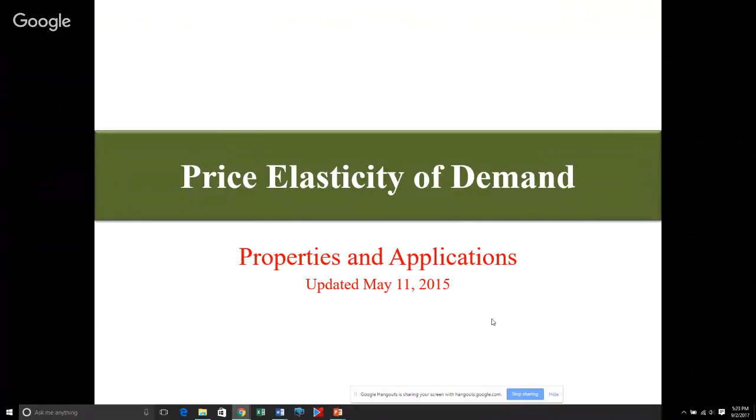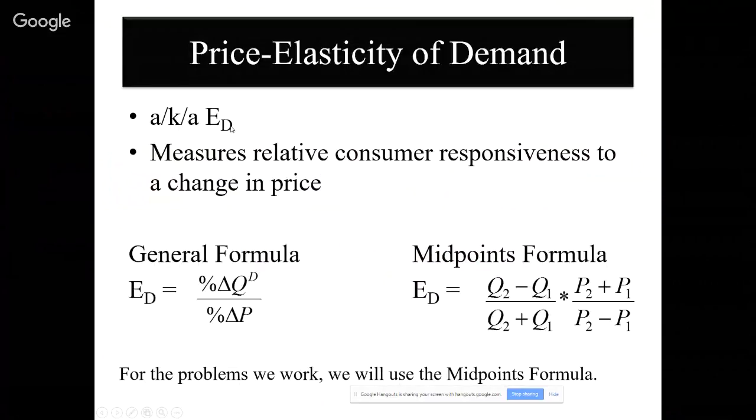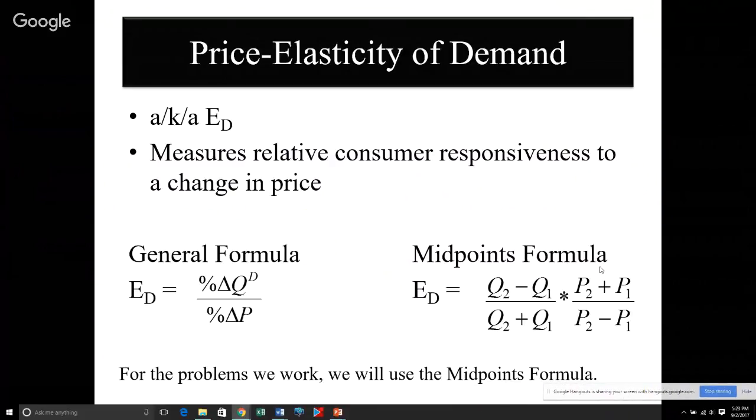Let's start talking about the math end of this stuff. First, price elasticity of demand, E sub D, measures what we call relative consumer responsiveness to a change in price. E sub D is not the same as slope. Slope is an absolute rate of change, whereas E sub D is a relative rate of change. Think of it this way: five dollars is a big percentage of ten dollars, it's fifty percent. But five dollars is a very small percent of fifty thousand dollars. It's measuring relative sensitivity of a percentage change in quantity demanded to the percentage change in price.